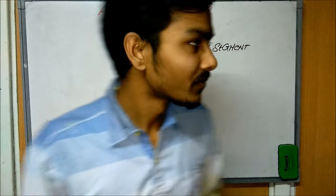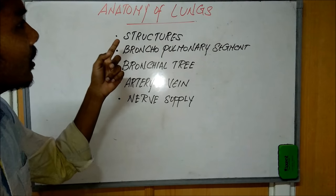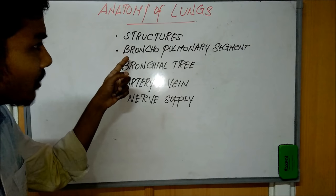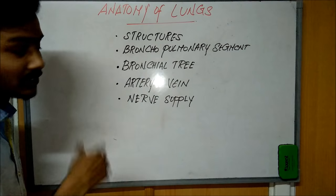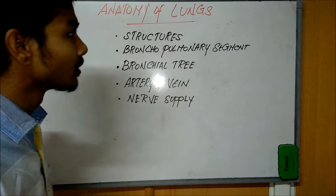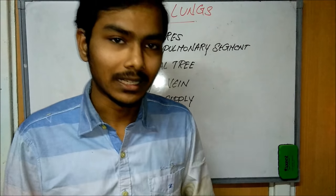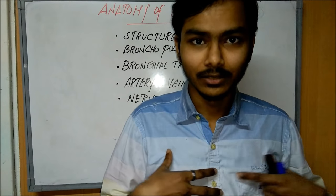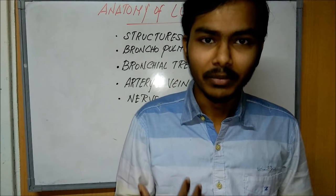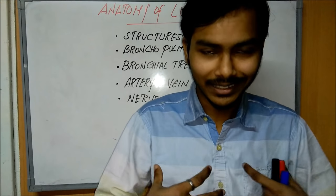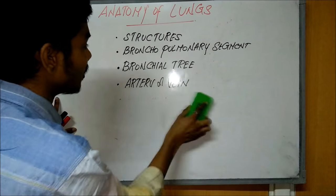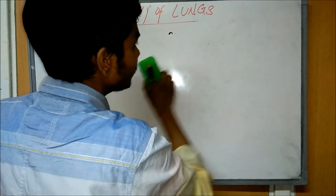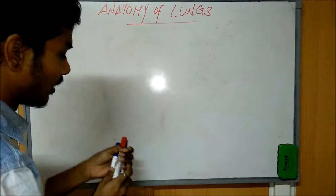Hey everyone, this is Vignes from VNMU. Today we are going to see the anatomy of the lungs. We will see the structures present in the lungs, what is meant by bronchopulmonary segment, what is the bronchial tree, arteries and veins present in the lungs, and nerve supply to the lungs.